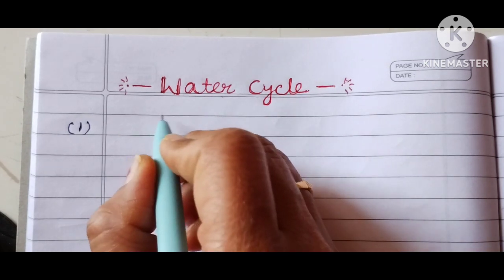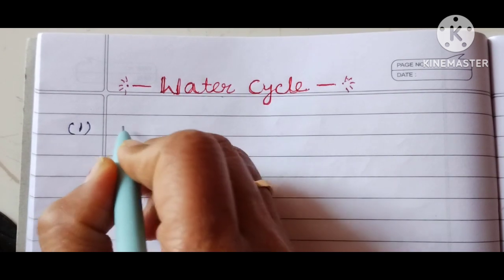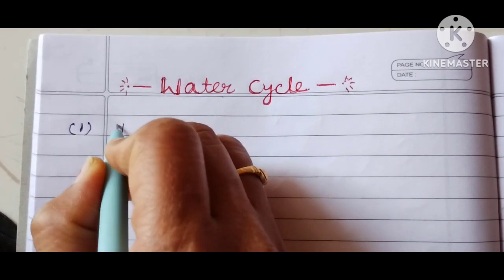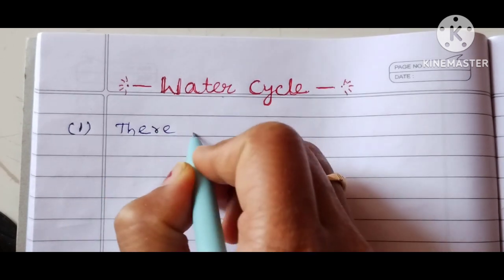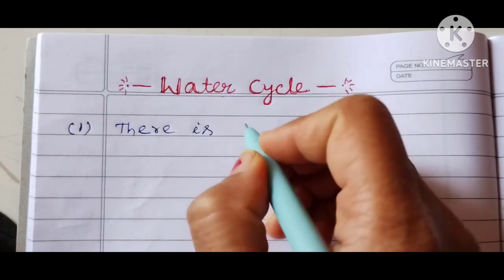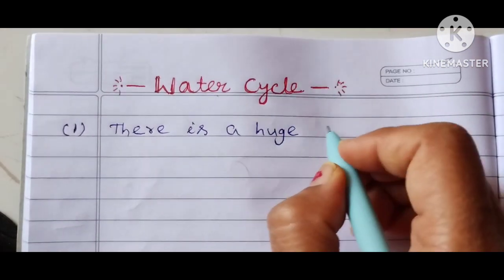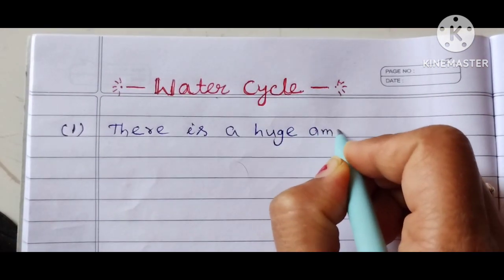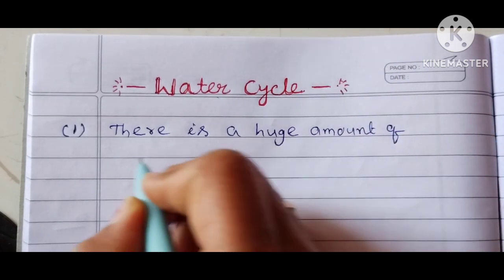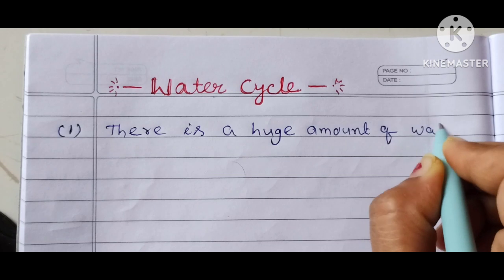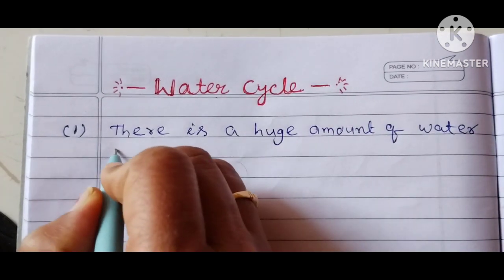So let's start to write a few lines about water cycle. The first one is there is a huge amount of water on earth.